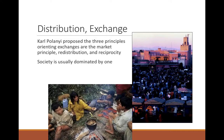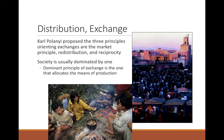The last aspect is how we distribute and consume produced goods. Karl Polanyi proposed three principles of exchange: the market principle, redistribution, and reciprocity. Society is usually dominated by one; the dominant principle allocates the means of production — land, labor, technology, capital. The market principle applies to marketplace exchange, where we barter for prices or pay in currency: we work, earn money, take it to market, and buy what we need.